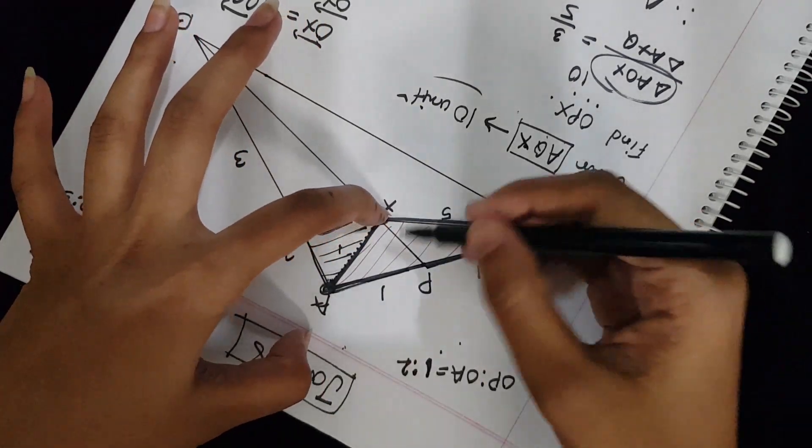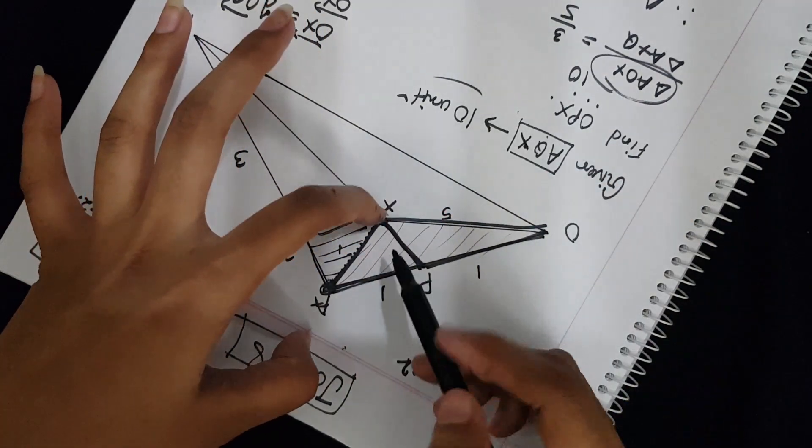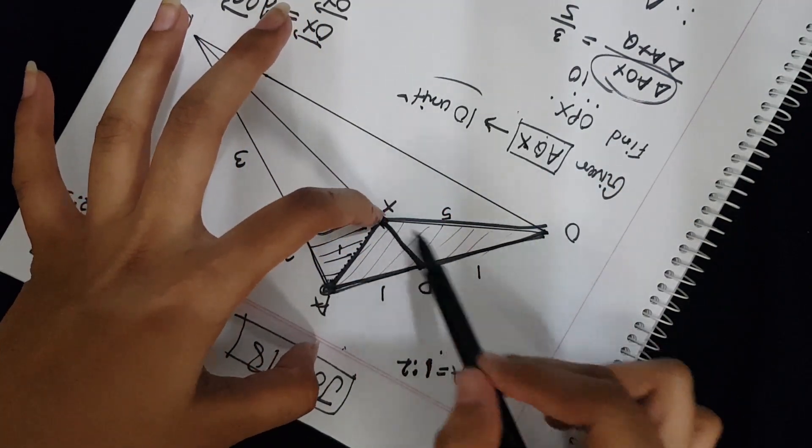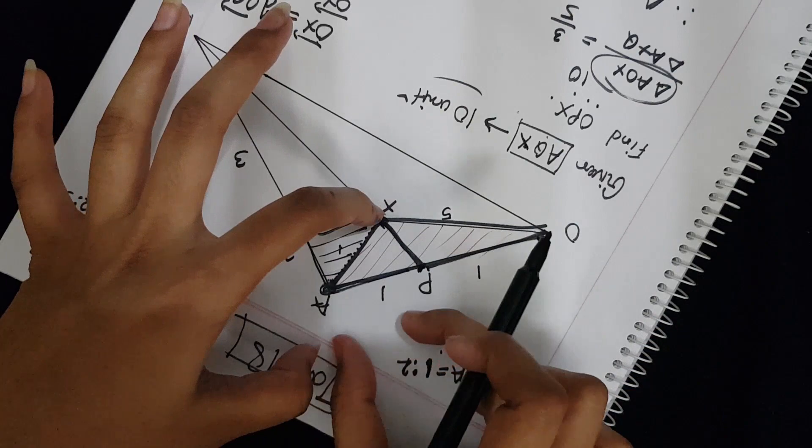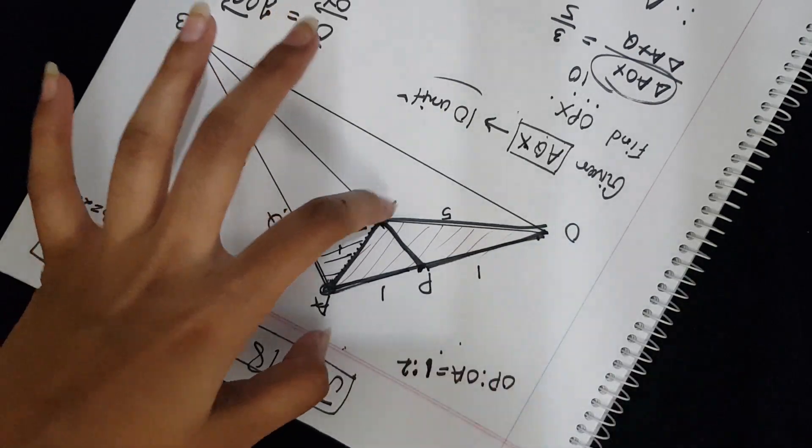We have two triangles here: triangle XAP and triangle XPO. AP and OP are the bases of the triangles.